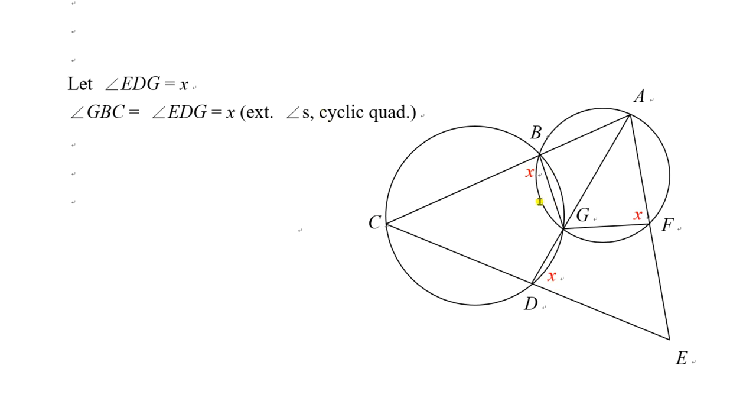Similarly, when you consider another circle ABGF, you can see that angle AFG equals angle GBC. Again, the reason is exterior angles of a cyclic quadrilateral.